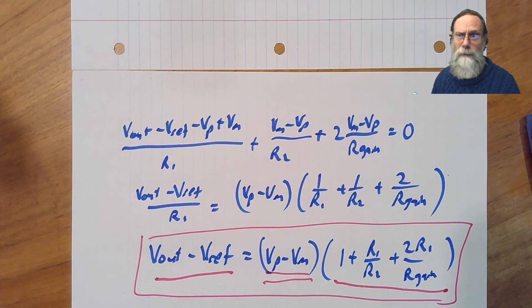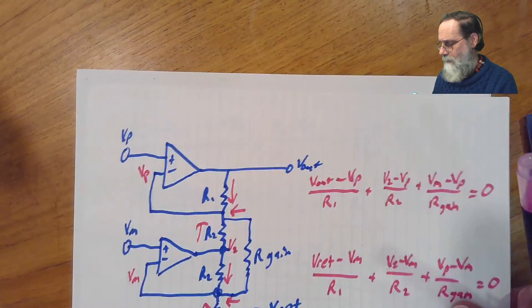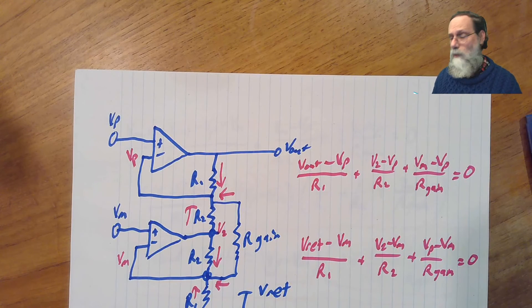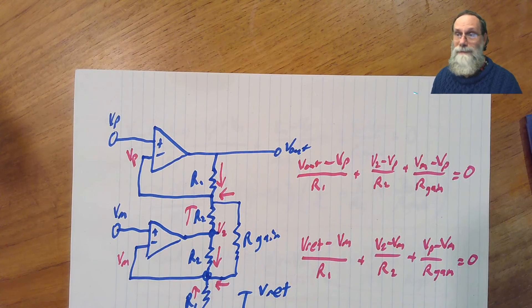As I said, we did have to worry a little bit about v2. Let's go back and look at v2 again. That's this node here. We have to make sure that that stays within a range in which this second op amp here can produce.